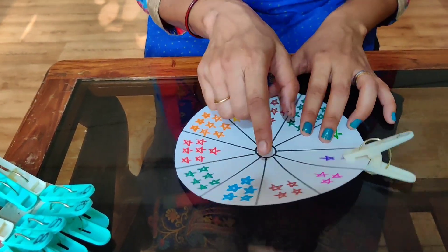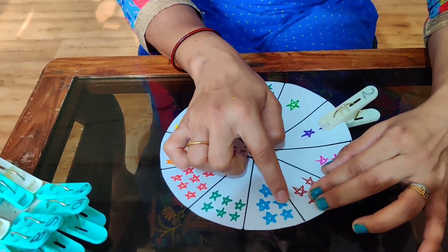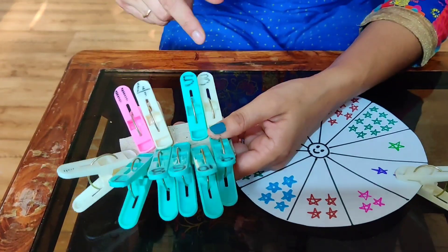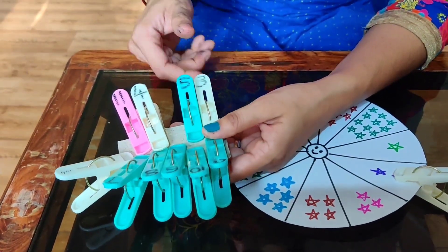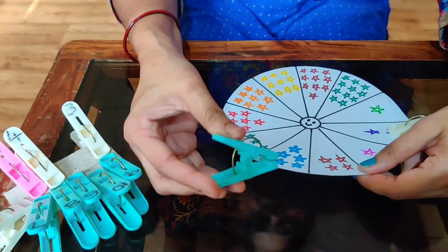Then again, if they are counting blue color stars, 1, 2, 3, 4, 5. Again, they have to find it out. Where is number 5 clip? Here it is. So they have to remove this and put it here.